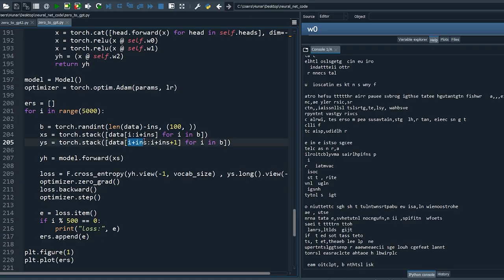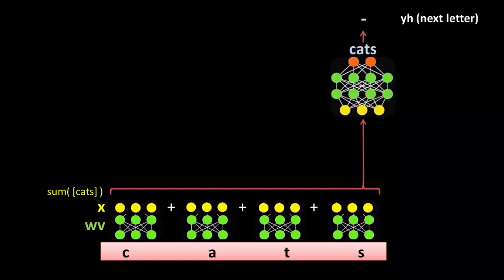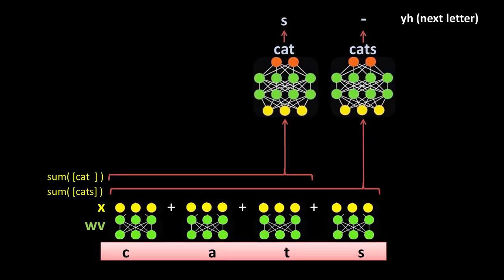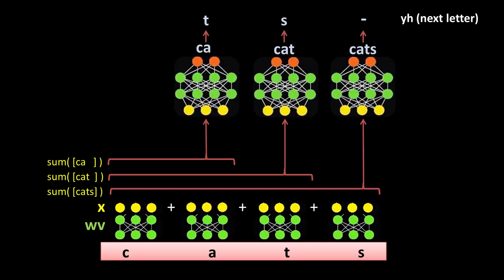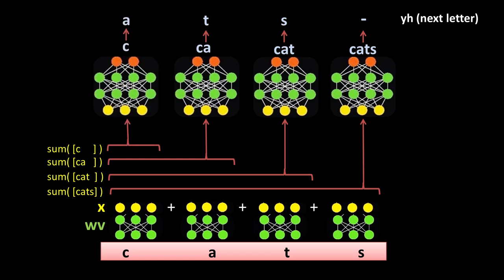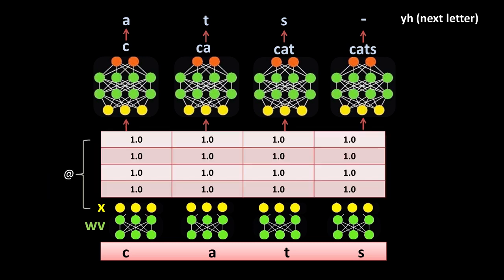Surprisingly, this is easy to do. Change this part from i plus ins to i plus one. Now instead of summing only the longest context, we need to sum the inputs of smaller contexts too and feed them separately to our nonlinear network. So now the network learns what comes after each context length. One easy trick is to do the dot product between the input and a matrix of the same size filled with ones except the upper triangle masked with zeros.